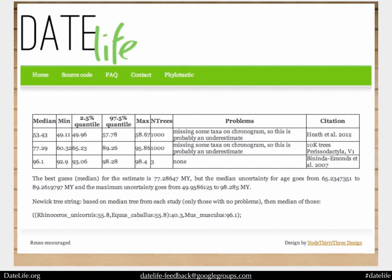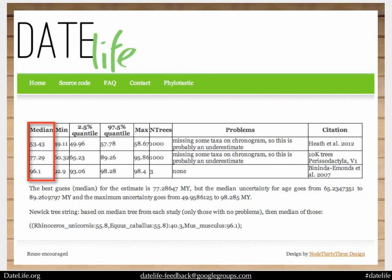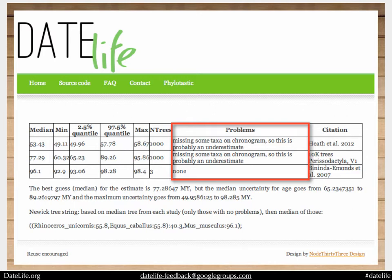You can see some of the nice features of the output. For each of the studies that has taxa that match, we get a median estimate of the age. Some studies have multiple trees — like a Bayesian study — that has a maximum age, a minimum age, and a median age, so you can get the average across all of those. Within a study, you can find information about the distribution: across all the trees in that dataset, you get a credible interval, a median, an absolute max, and absolute min, as well as how many trees are in the dataset. If there are problems, it warns you. For example, if I gave three taxa and only two matched in a tree, it warns about a possible underestimate of the age.